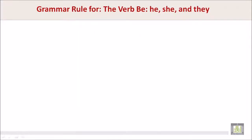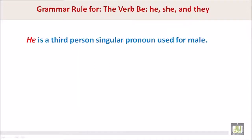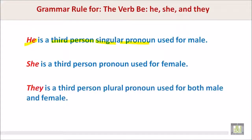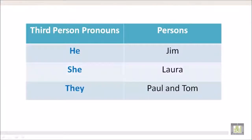Let's look at the pronouns. He is a third-person singular pronoun used for males. She is a third-person singular pronoun used for females. They is a third-person plural pronoun used for both males and females. Let's look at the third-person pronouns: he with Jim, she with Laura, and they with Paul and Tom.